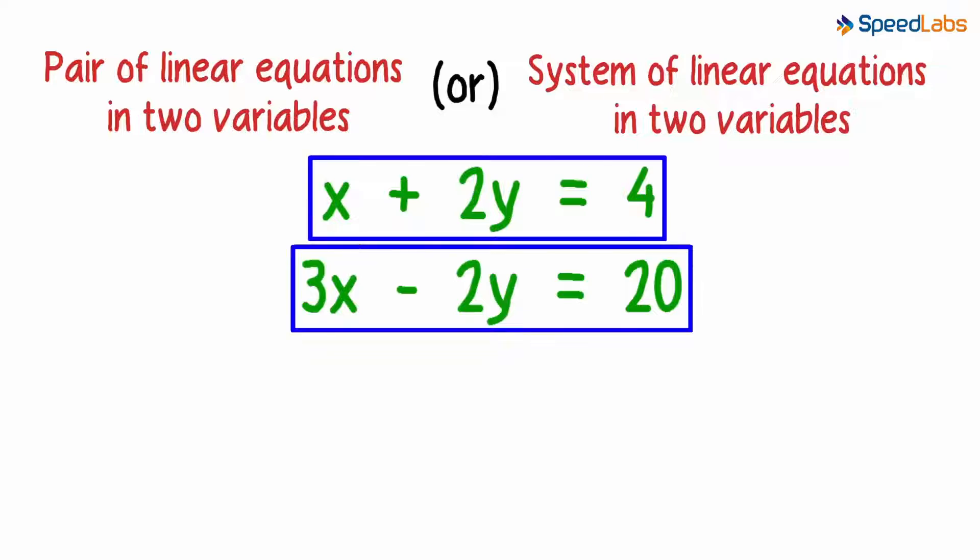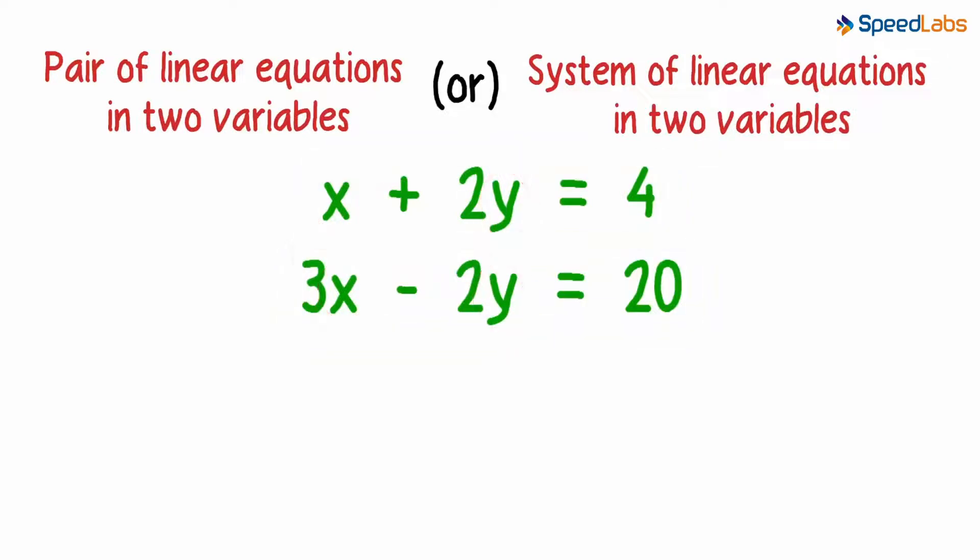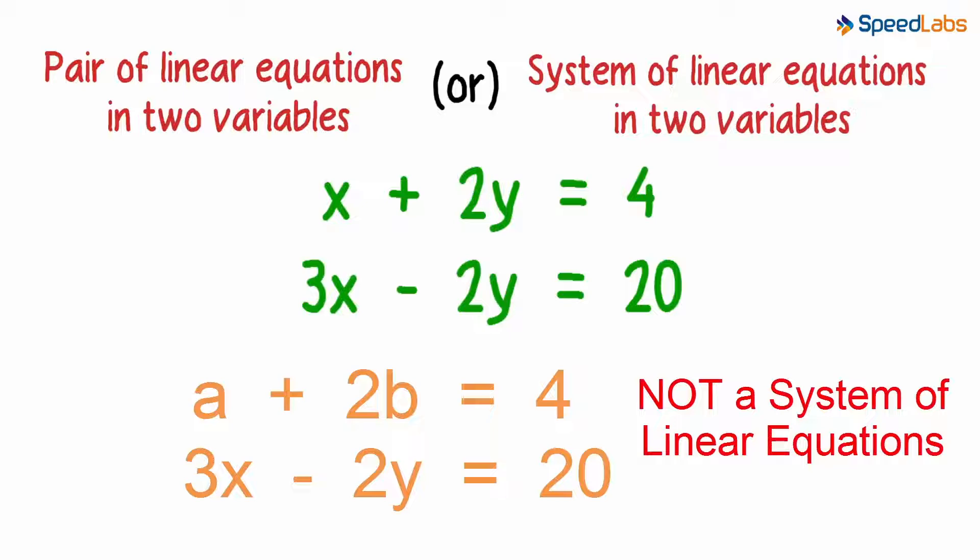Note that both equations have the same two variables x and y. a plus 2b equals 4 and 3x minus 2y equals 20 will not form a system of linear equations in two variables, as the two variables in each equation are not the same.